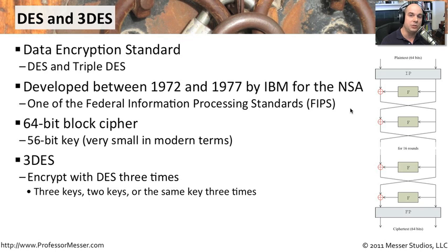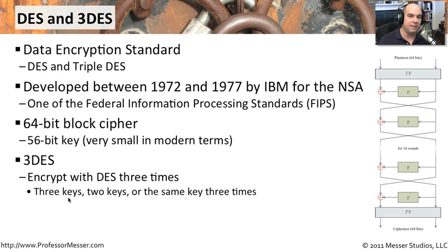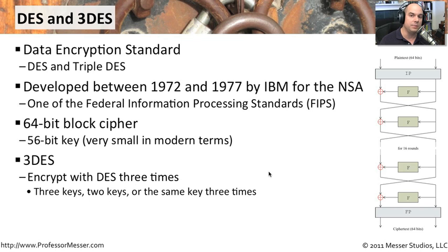What we've decided to do instead is use Triple DES. Triple DES takes the same idea of DES and does the same encryption three times. In each case, you could be using three different keys — one key on the first pass, a different key on the second pass, and then back to the first key on the third pass. Or you could use the same key all three times. This makes it harder to do the brute force attack, and takes a lot longer to figure out what the original key might be.